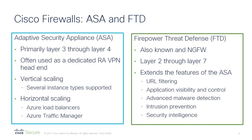Cisco offers two firewalls for the Azure environment: the ASA and FTD. The ASA, which stands for Adaptive Security Appliance, is the best-of-breed Layer 3 through 4 firewall. Firepower Threat Defense, FTD, builds on that functionality, adding Layer 7 capabilities including URL filtering, application visibility control, advanced malware detection, intrusion prevention, and security intelligence.